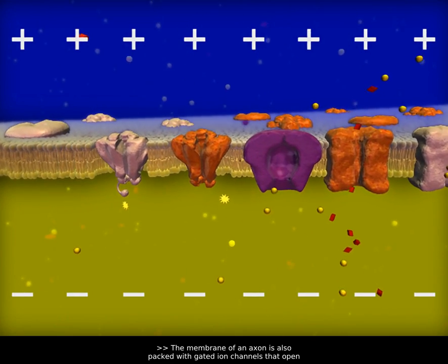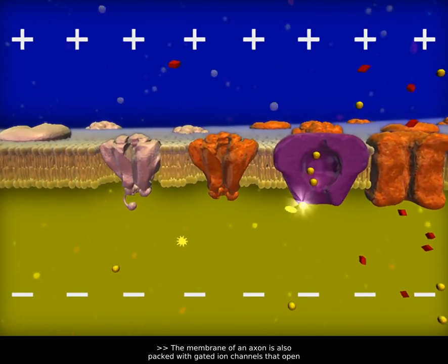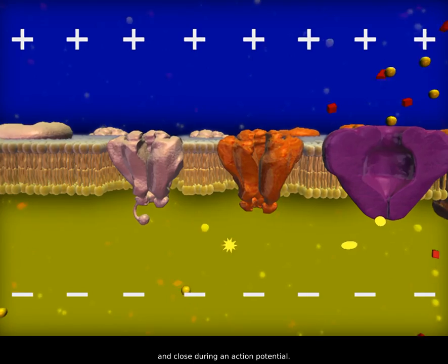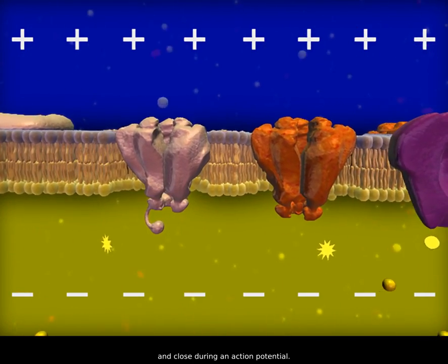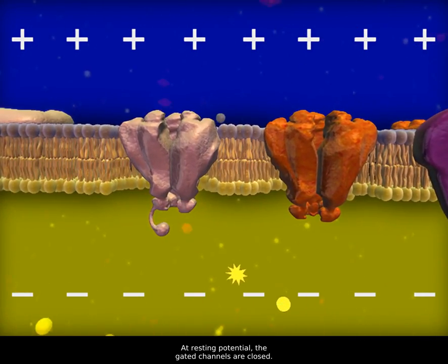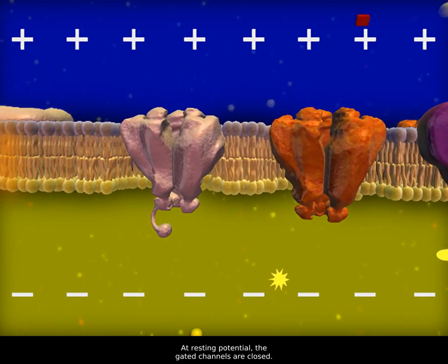The membrane of an axon is also packed with gated ion channels that open and close during an action potential. At resting potential, the gated channels are closed.